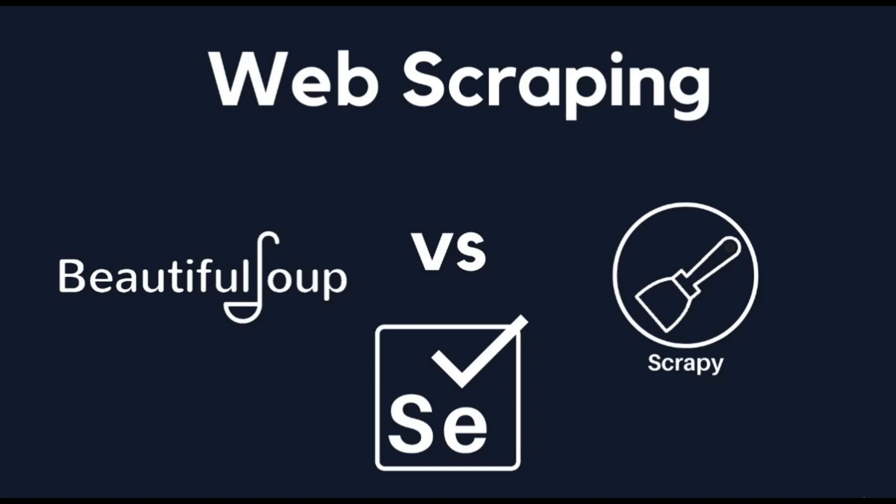If you're going to learn web scraping on your own, you'll probably know that the main three web scraping libraries in Python are Beautiful Soup, Selenium, and Scrapy. But which one is the best? Let's find out in this video.